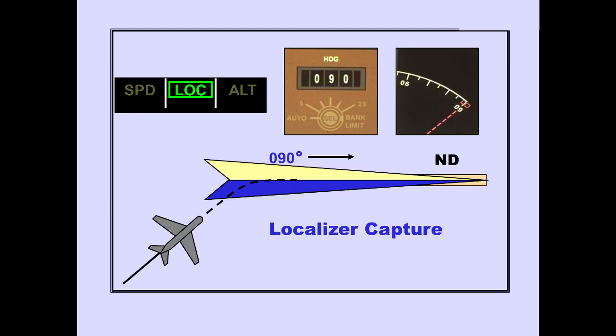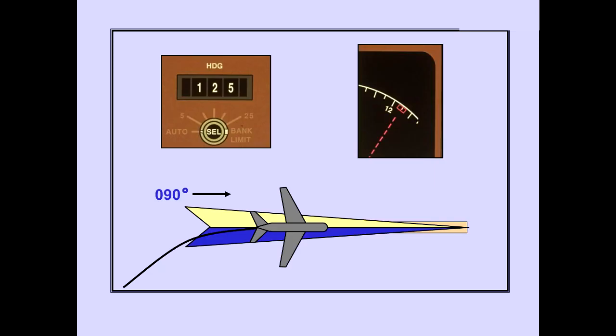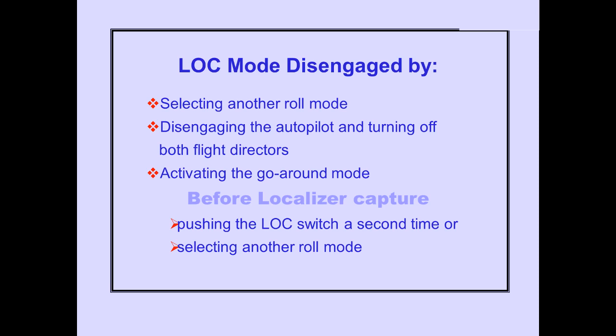Also, at localizer capture, the selected heading window and selected heading markers automatically change to coincide with the front course. The selected heading may now be changed — for example, the missed approach heading may be set. The localizer engaged mode may be disengaged by selecting another roll mode, disengaging the autopilot and turning off both flight directors, or engaging the go-around mode. Before localizer capture, the LOC mode may be disengaged by pushing the LOC switch a second time or selecting another roll mode.